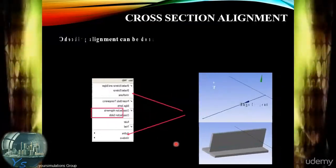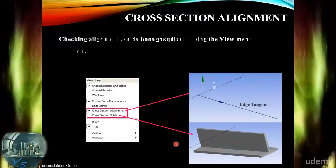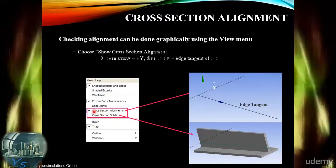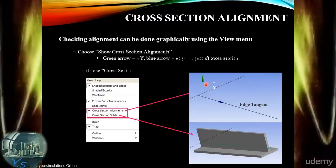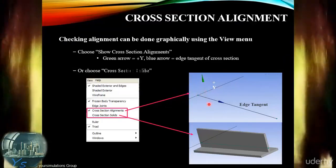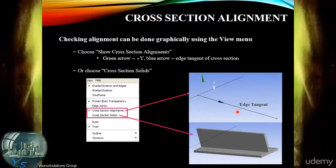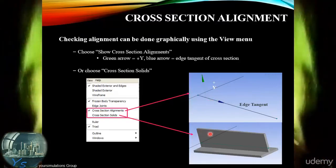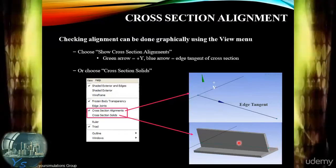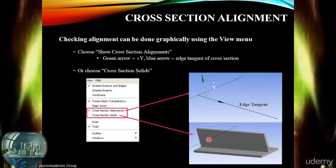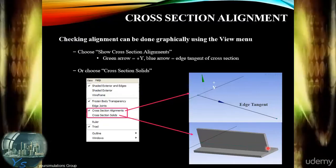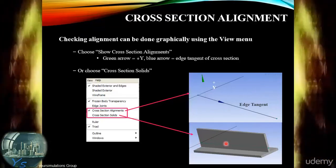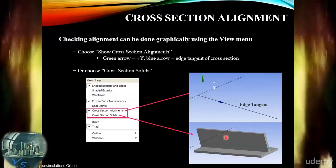We can check that the cross-section has been aligned correctly in a couple of different ways. We can go to View and select Cross-Section Alignments or Cross-Section Solids. If we opt for Cross-Section Alignments, we can see vector arrows — a green arrow indicating positive Y and a blue arrow showing the edge tangent. The other option, Cross-Section Solids, displays the cross-section in 3D model mode, showing how the body lies relative to the original line body shown in blue in the centre.